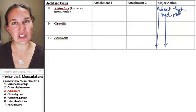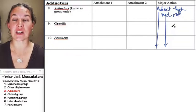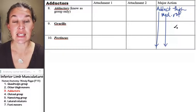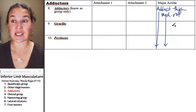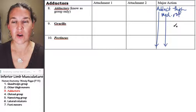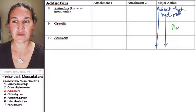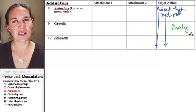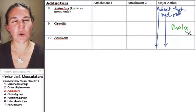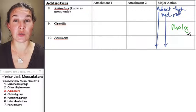Gracilis has an additional action, and I'm going to tell you what the action is, and then you're going to tell me what that means for where it's attached. The additional action of gracilis is that it also flexes the leg. So what does that tell you about where gracilis is going to attach?